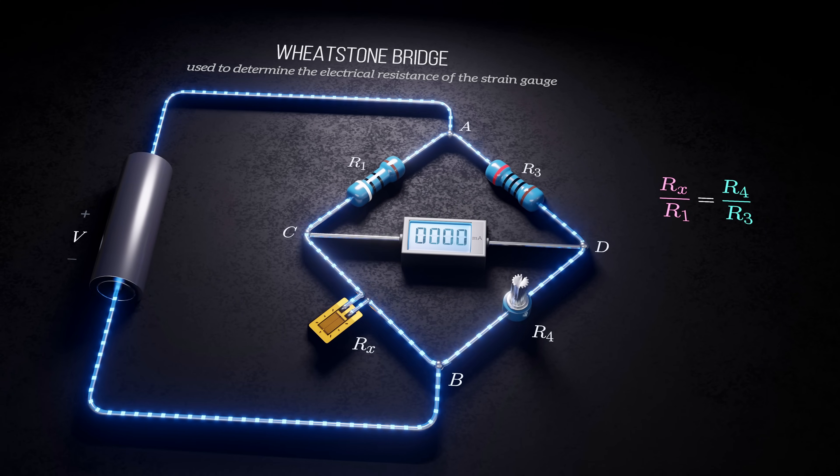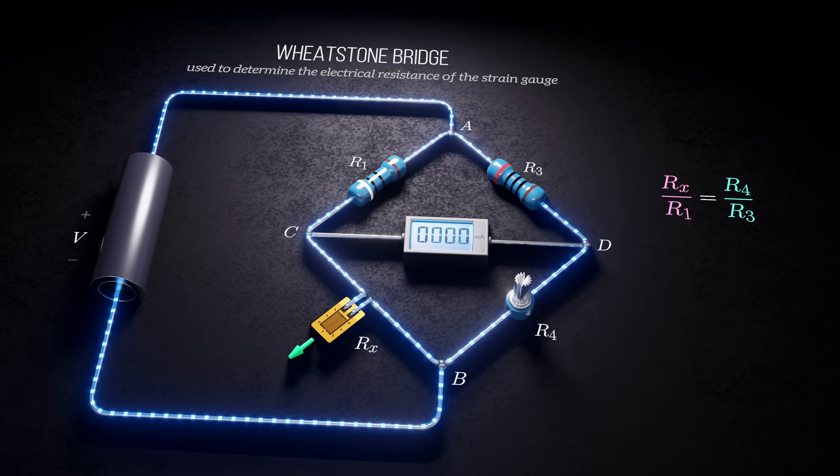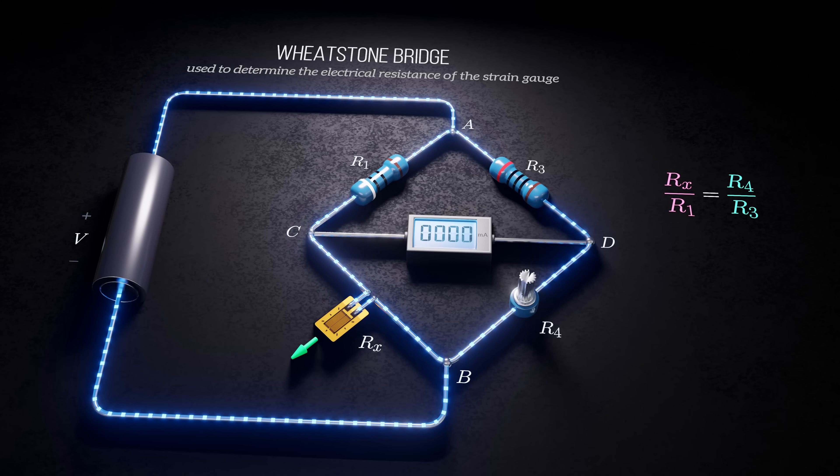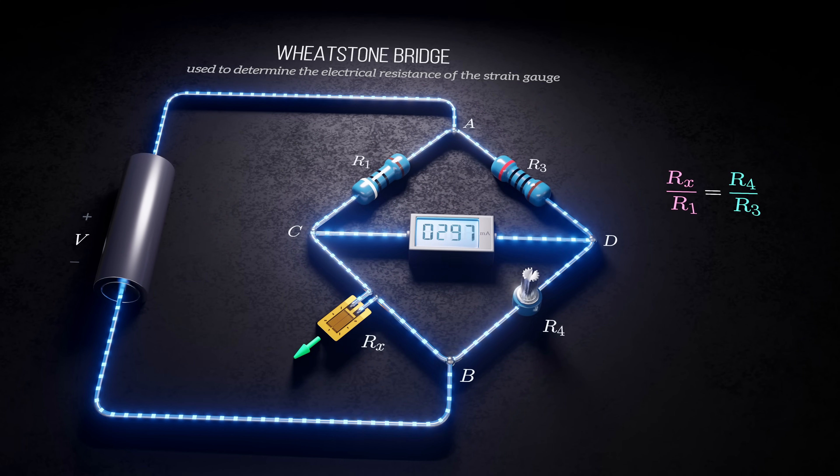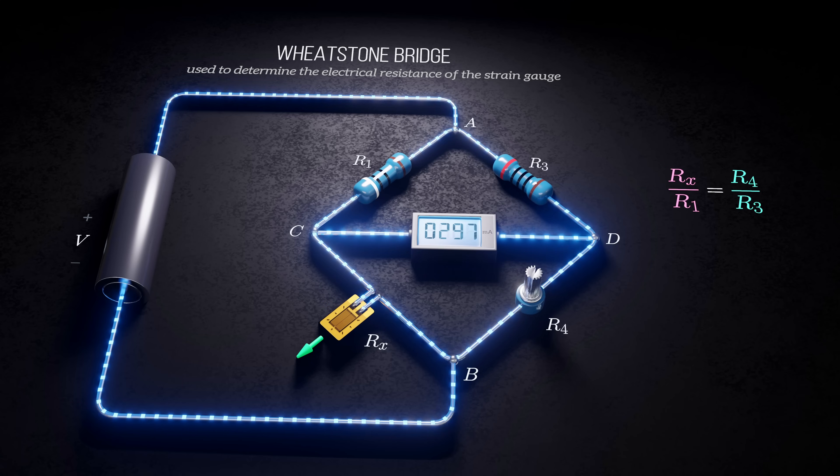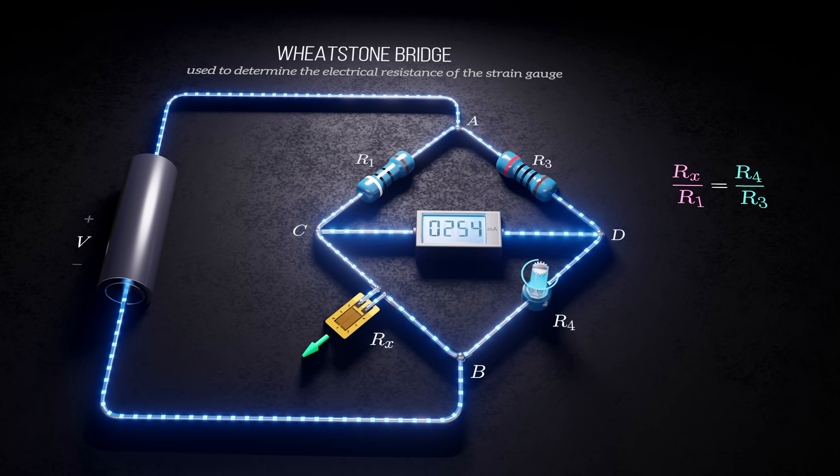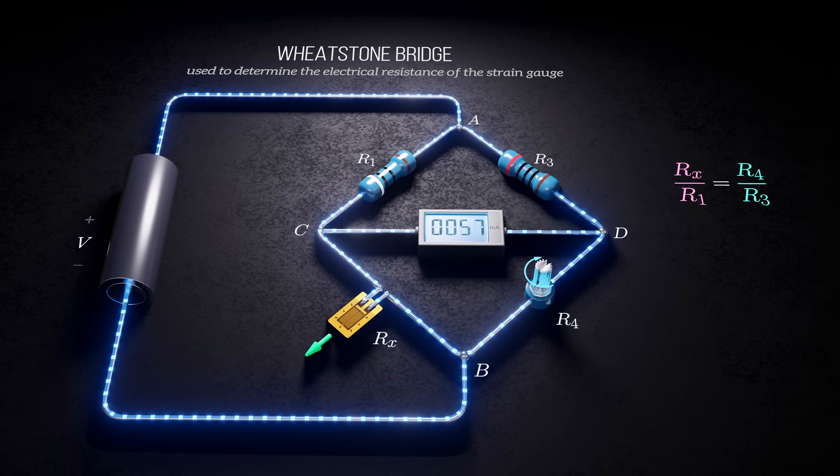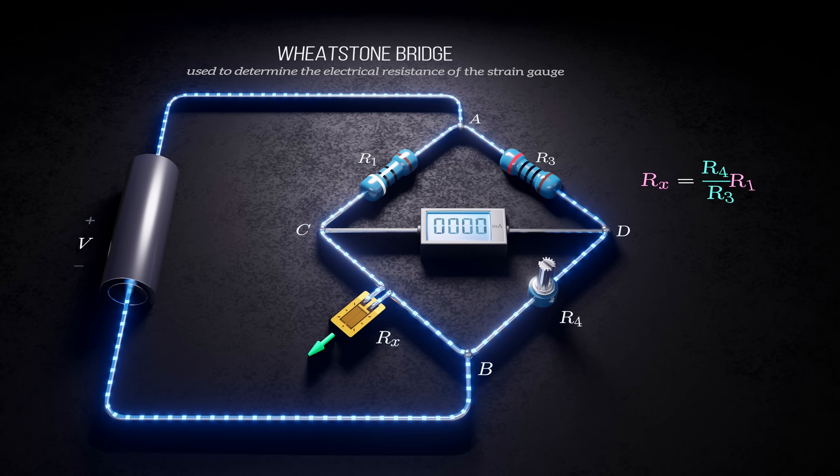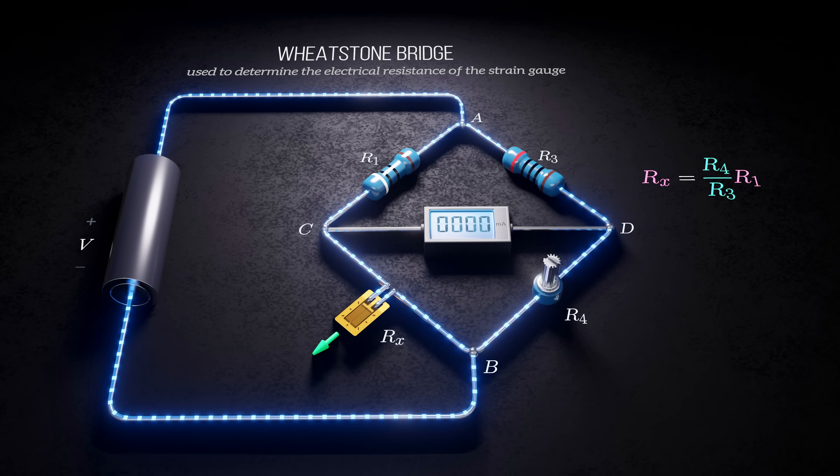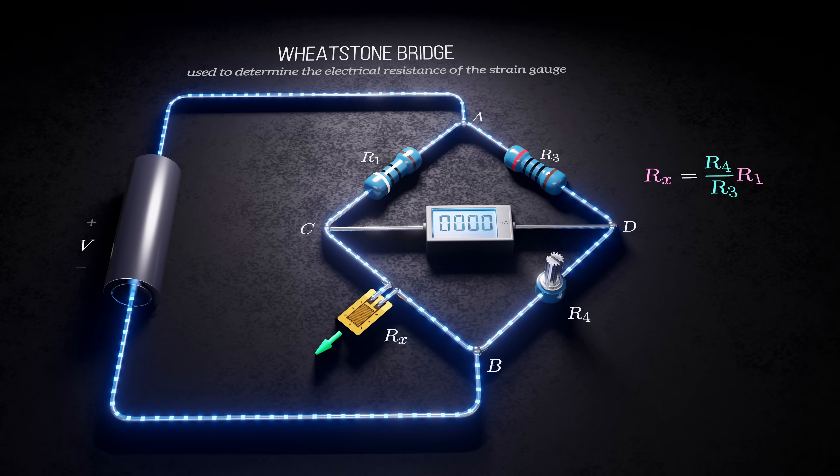When the strain gauge is subjected to a load, its resistance changes, causing a voltage imbalance in the bridge and current to flow through segment CD. By rebalancing the bridge using the adjustable resistor, the change in the electrical resistance of the strain gauge can be determined, and from there the gauge factor can be used to calculate the strain seen by the strain gauge.